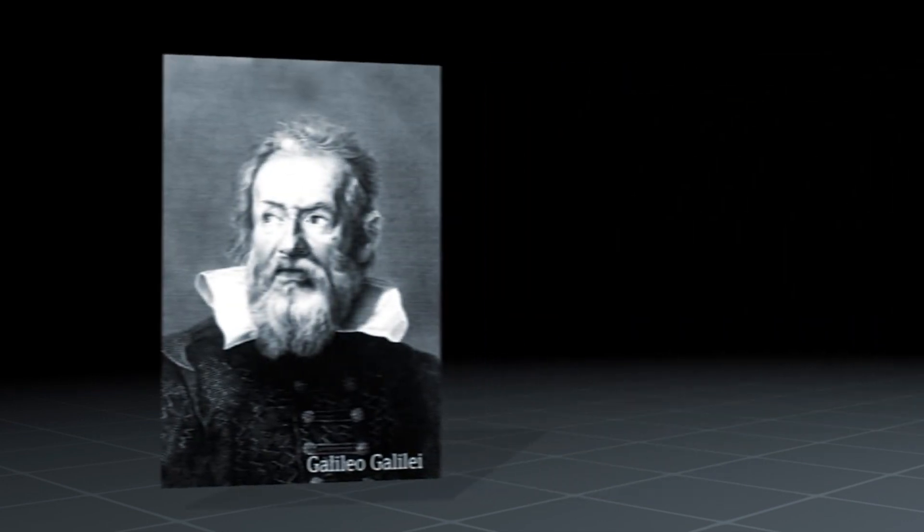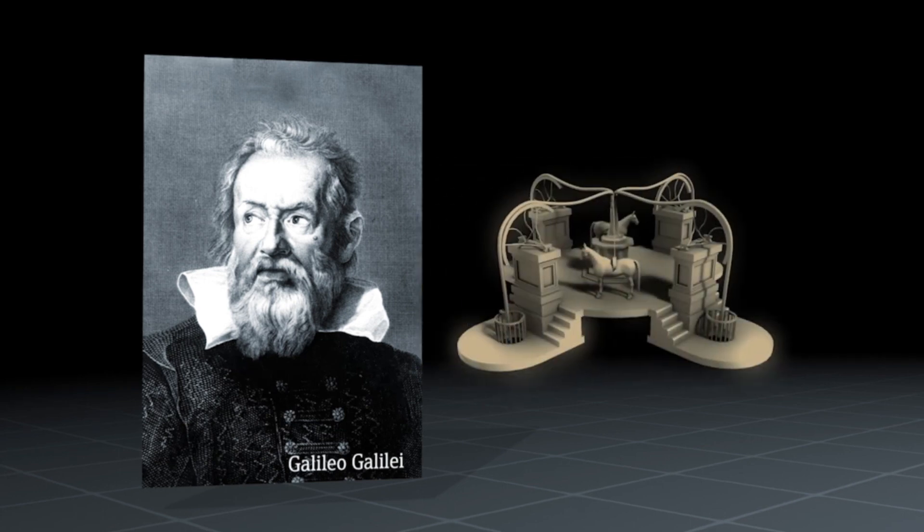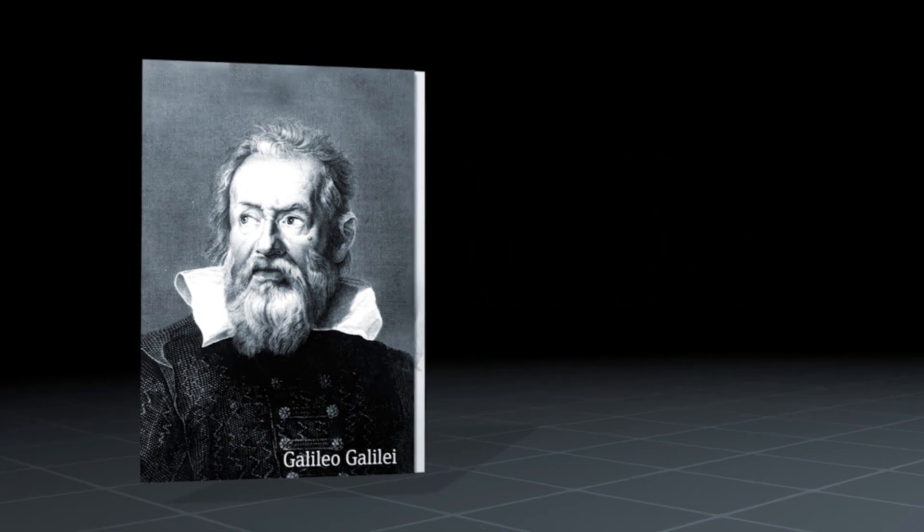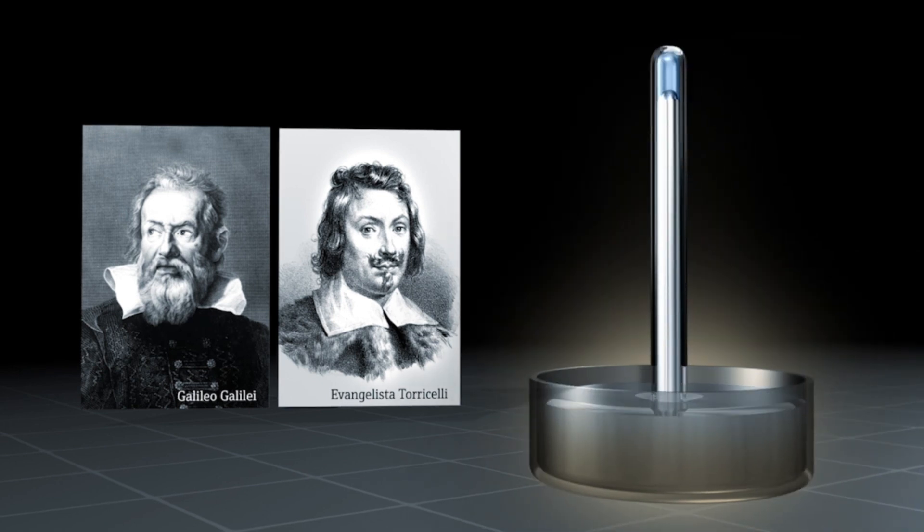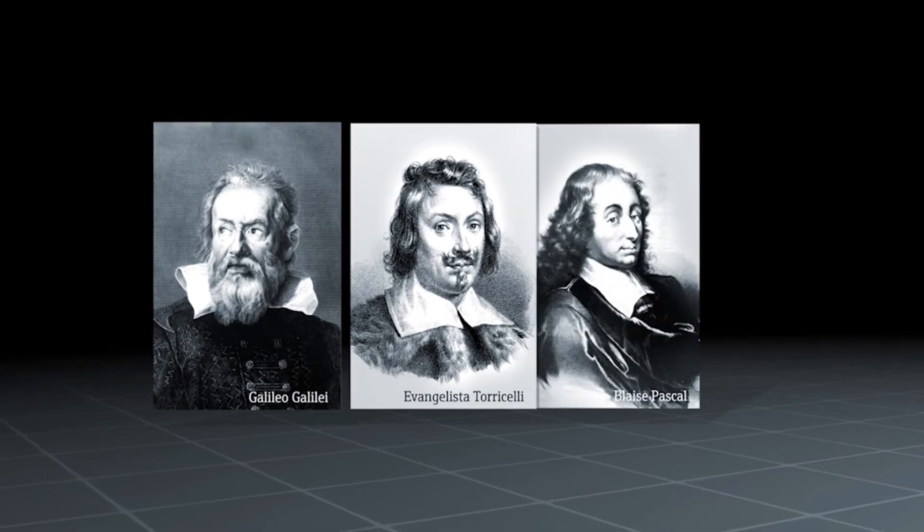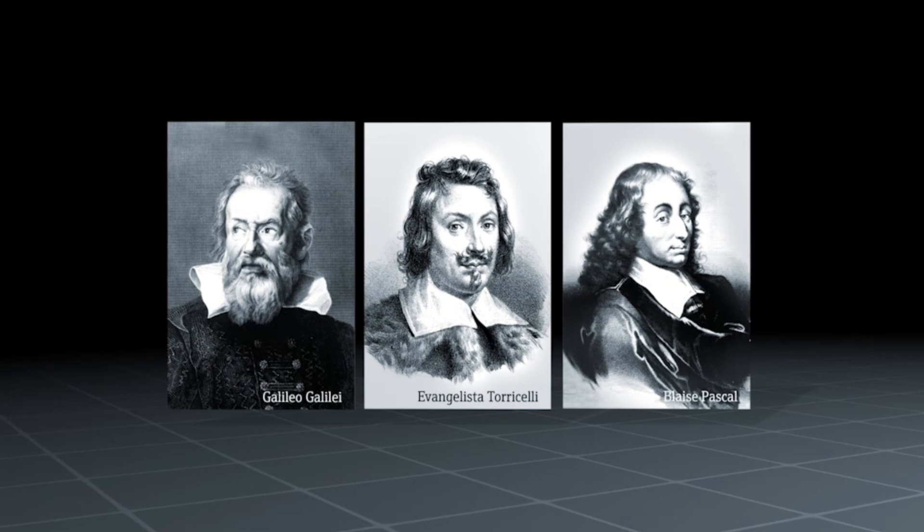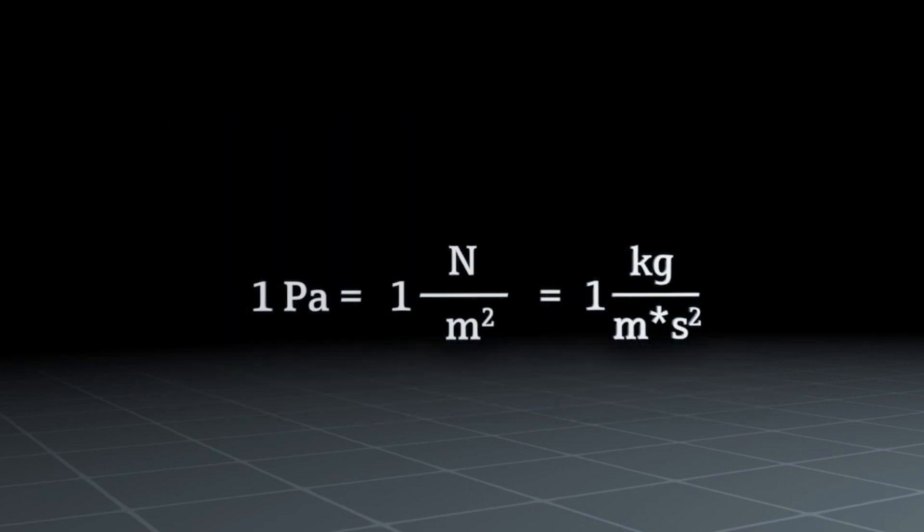The first scientific origins of pressure measurement were documented in the middle of the 17th century. Galileo Galilei made tests with pumps to overcome the differences in altitude for irrigation purposes. Evangelista Torricelli conducted research with mercury columns and discovered the state of the vacuum. Blaise Pascal heard of these experiments, continued the research and could determine the weight of air. Pascal called this force pressure and to pay homage to him, the SI unit for pressure was named after him.